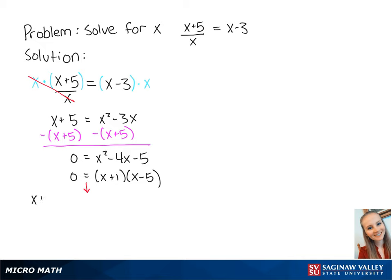Now we have x plus 1 equals 0, and we have x minus 5 equals 0. For the first equation, if we subtract 1 from both sides, we get x equals negative 1. For the second one, if we add 5 to both sides of the equation, we get x equals 5.